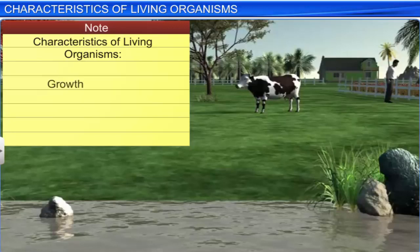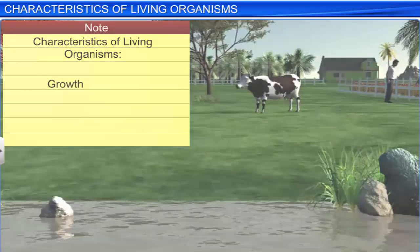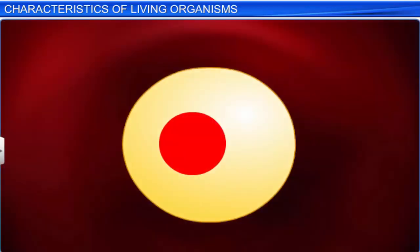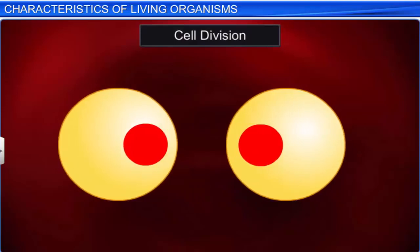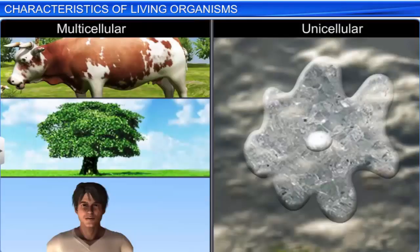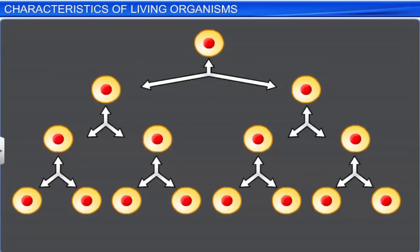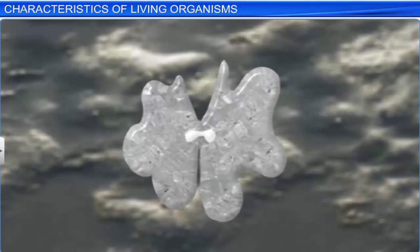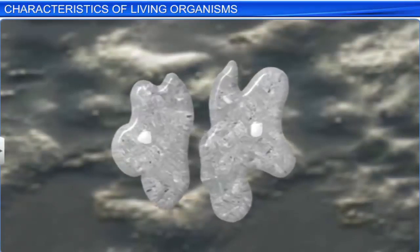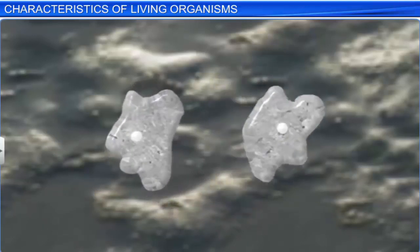One such characteristic is growth. Living organisms, whether multicellular or unicellular, grow due to cell division. However, cell division affects these organisms differently. In a multicellular organism, cell division results in an increase in mass, whereas in a unicellular organism like amoeba, it leads to the formation of two new organisms.